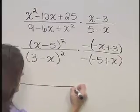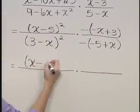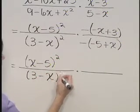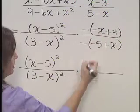I'm going to take one intermediate step here and rewrite this as x minus 5 quantity squared over 3 minus x quantity squared times, just rearranging terms here.